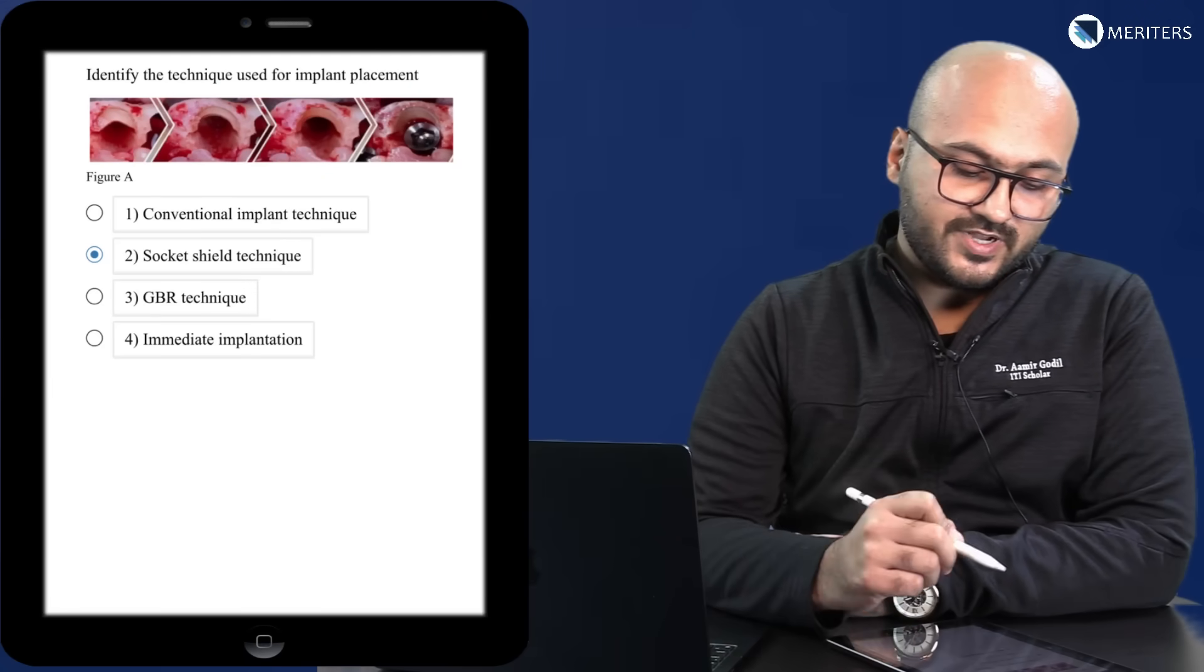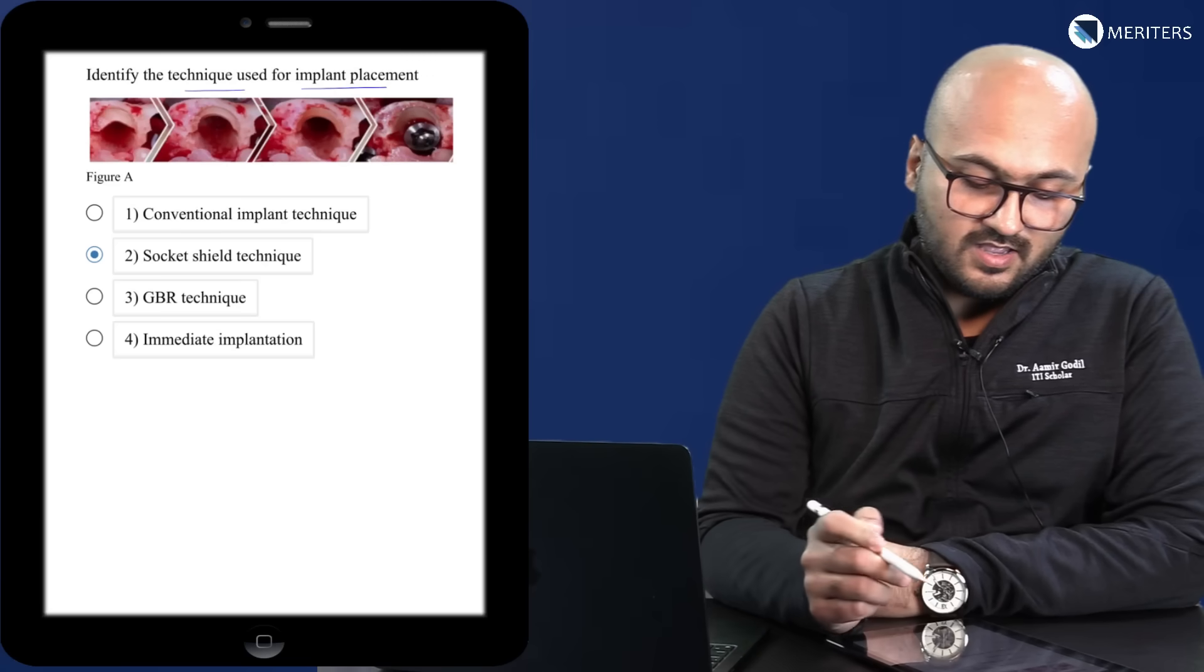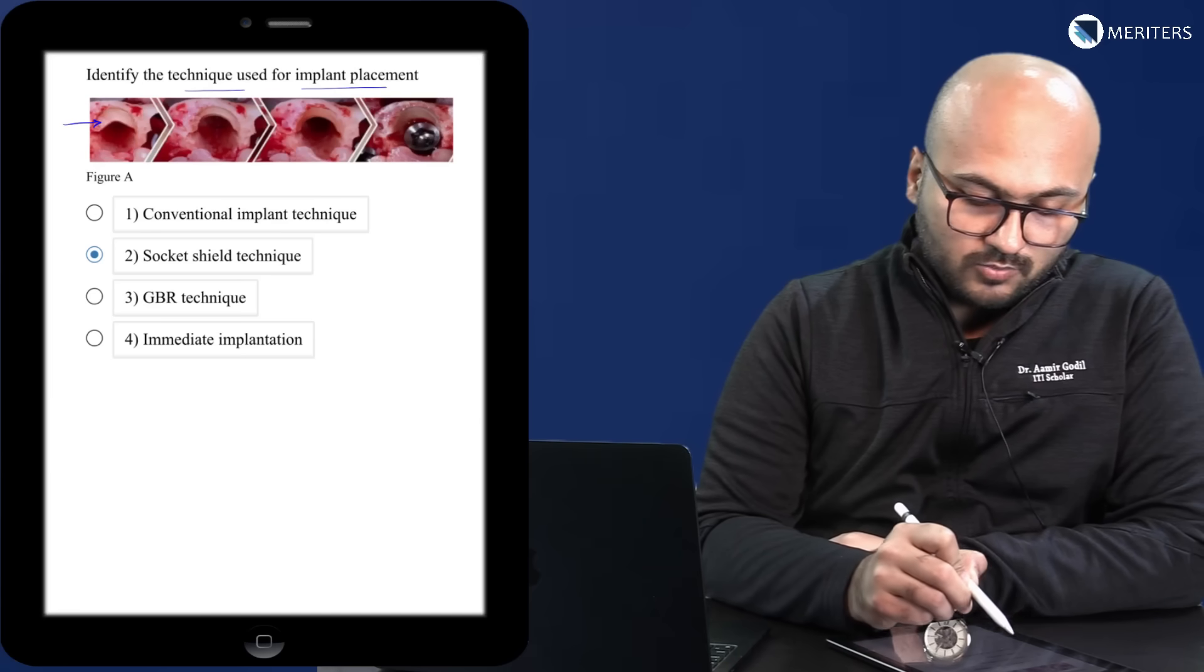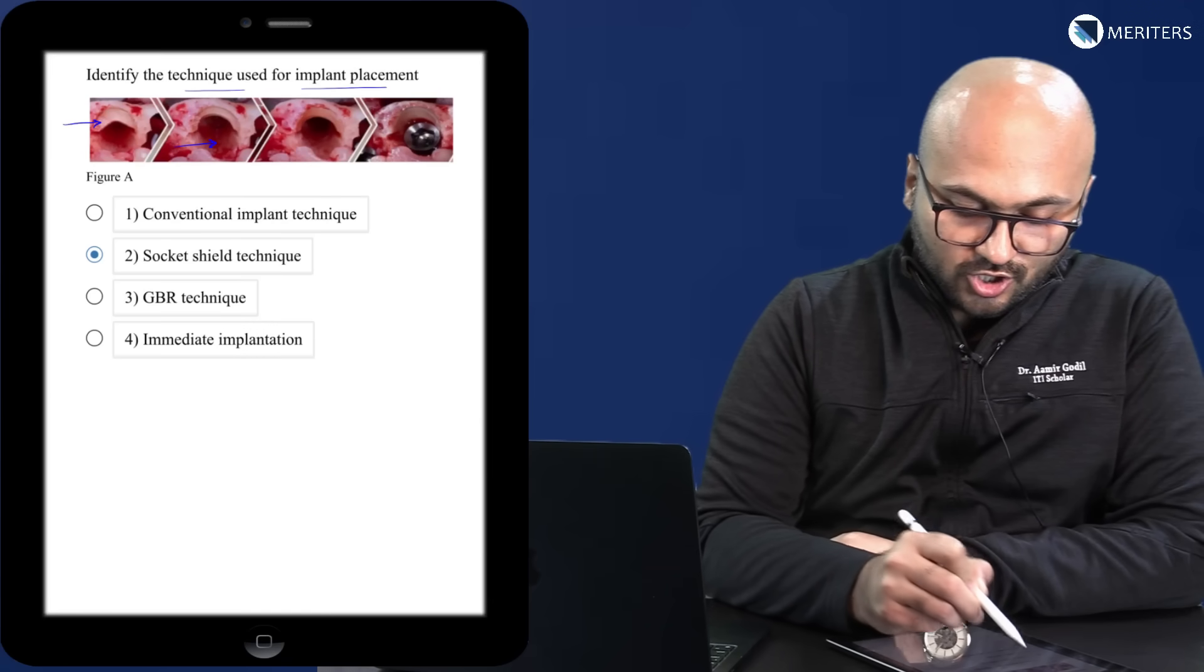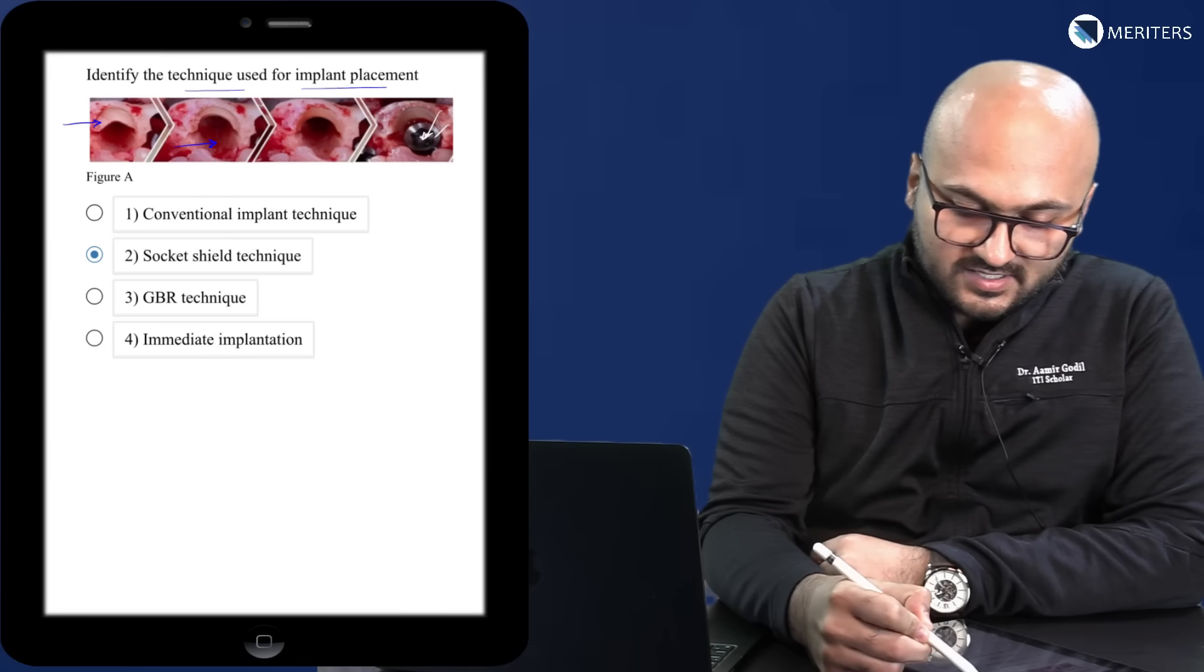Now consider this question in the exam. Identify the technique used for implant placement and you have an image given where you have a piece of root in the bone and then there is an osteotomy for the implant and then finally you have the implant placed over here.